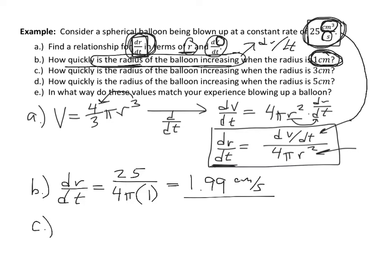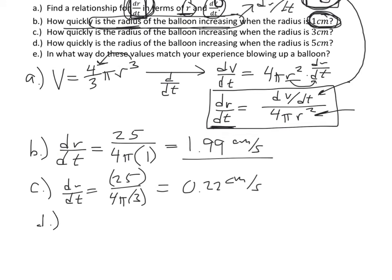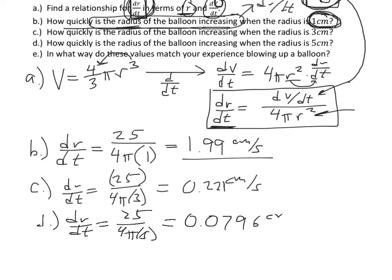For part C, how quickly is the radius increasing when the radius is 3? Plugging in 25 on top and 3 on the bottom gives dr/dt ≈ 0.22 centimeters per second. For part D, when the radius is 5: dr/dt = 25 / (4π·5²) ≈ 0.0796 centimeters per second.